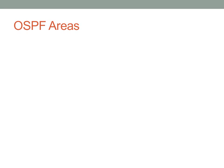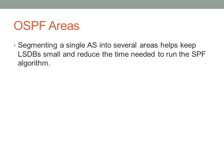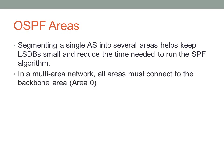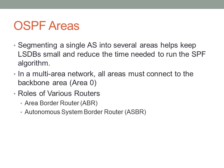OSPF areas allow you to segment a single autonomous system into several smaller areas. The goal is to keep link state databases small, since SPF is a fairly CPU-intensive algorithm. In a multi-area network, all areas must connect to area zero, which is the backbone area. Different routers take different roles: an area border router (ABR) is an OSPF router configured for two areas, and an autonomous system border router (ASBR) sits at the edge of your network connecting to another autonomous system using Border Gateway Protocol.